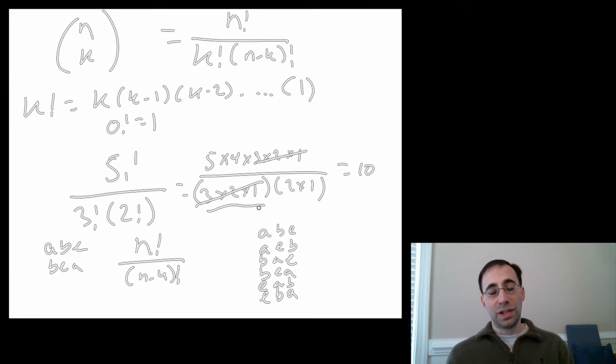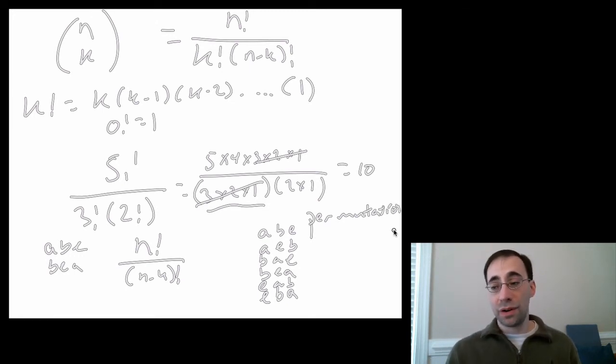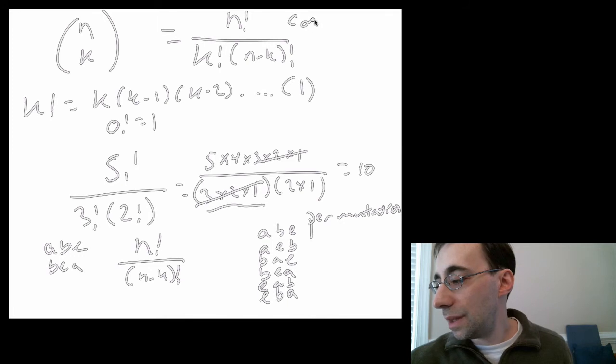Again, you see permutations much less than combinations. These are permutations. Because to permute something means to change the order. These are combinations.